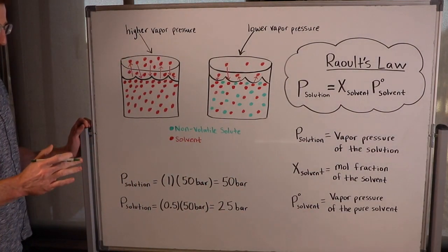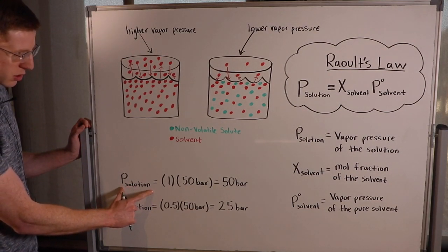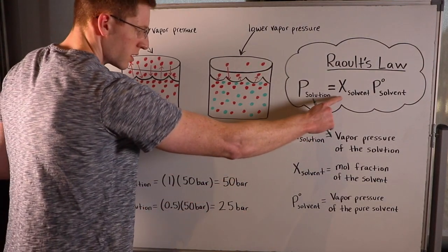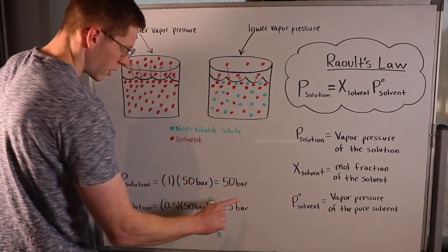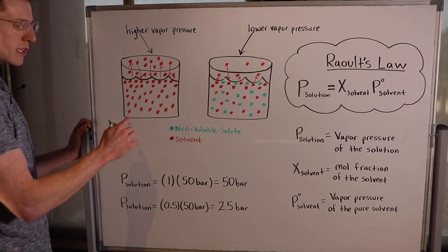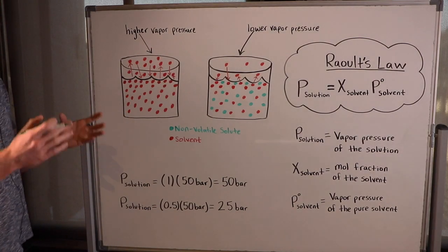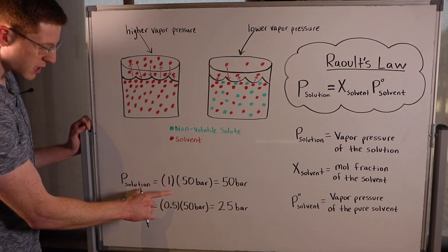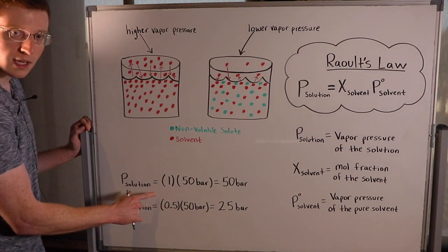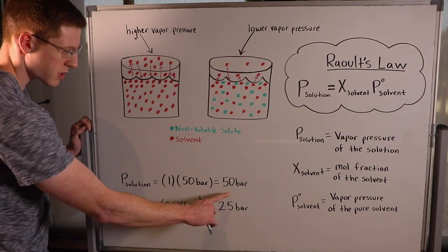Let's think about this with a couple of examples. In the first example, X_solvent equals 1, meaning the mole fraction of the solvent is 1 — the solution is entirely a pure solvent. So we would expect the solution to have the same vapor pressure as the pure solvent, and that's exactly the case: 1 times 50 bar equals 50 bar.